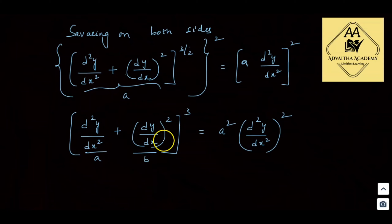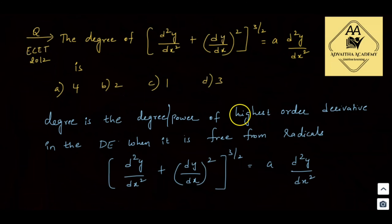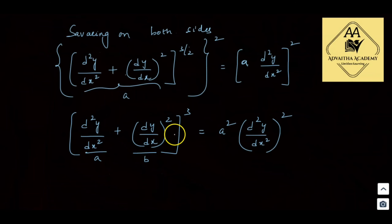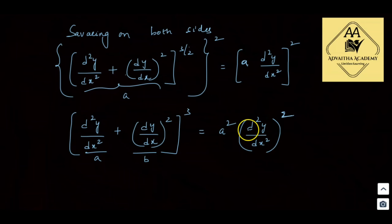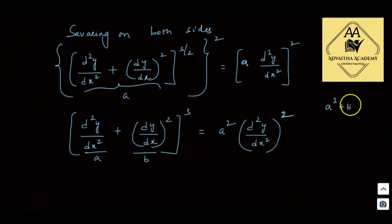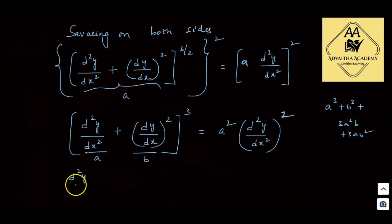Expanding the left side using (a+b)³ = a³ + b³ + 3a²b + 3ab²: we get (d²y/dx²)³ + (dy/dx)⁶ + 3(d²y/dx²)²(dy/dx)² + 3(d²y/dx²)(dy/dx)⁴.